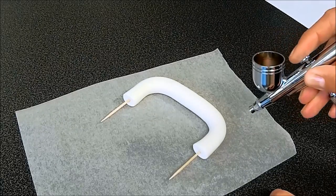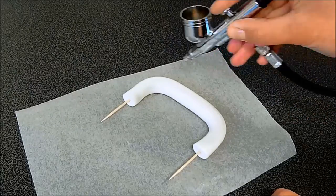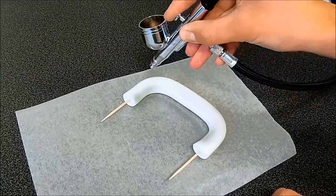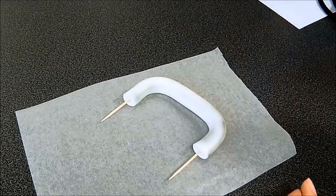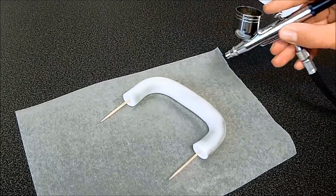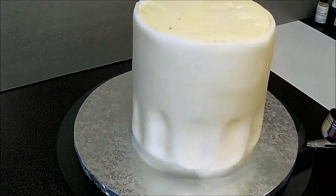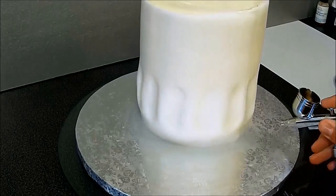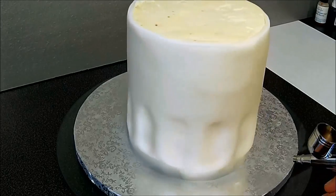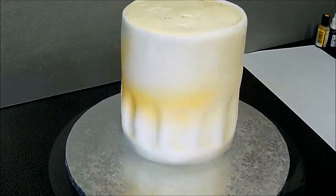When the handle is dry I'm using an airbrush to paint it grey in a few places, and I'm putting it away on the side. Now I'm applying this grey color to the bottom of the cake.